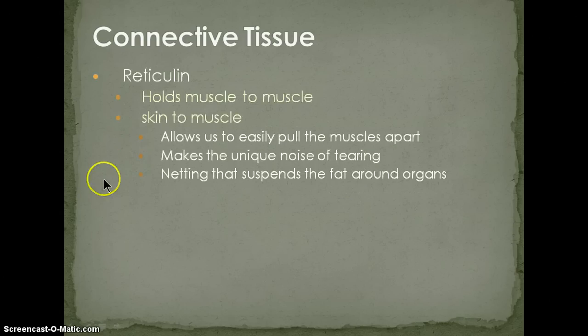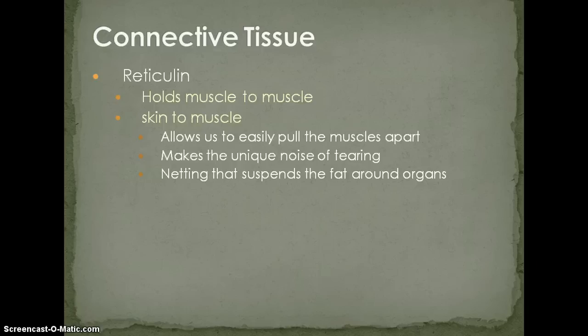The third type of silver skin is the lightweight variety — the reticulum. It holds muscle to muscle and skin to muscle, and allows us to easily pull muscles apart. When we're seaming muscles in the lab, what actually allows us to seam them out is the reticulum holding those bundles together. Elastin holds muscle to bone, and the reticulum holds muscle groups together specific to their motion or locomotive action.